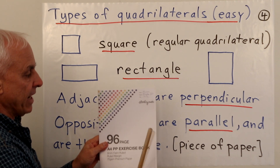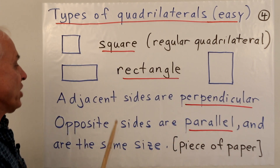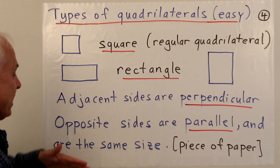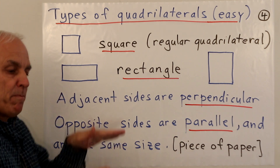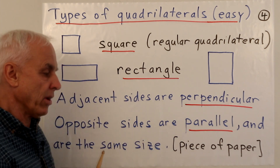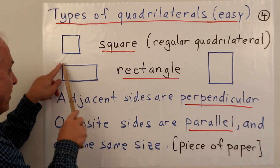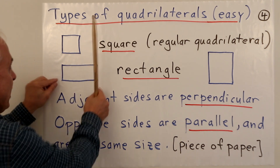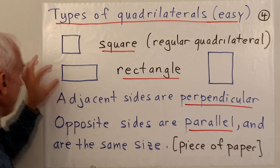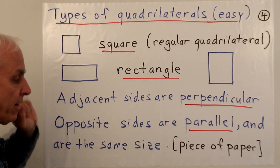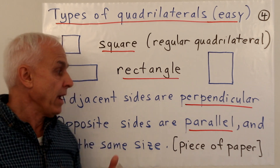Perpendicularity at each of the corners or vertices is a characterizing property of the rectangle — adjacent sides are perpendicular. Another property is that opposite sides, like this one and this one, are parallel — like railway tracks. And of course opposite sides are also the same size: if you took one segment, lifted it up, and placed it down on the opposite side, it would exactly match. A rectangle has a lot of symmetry.